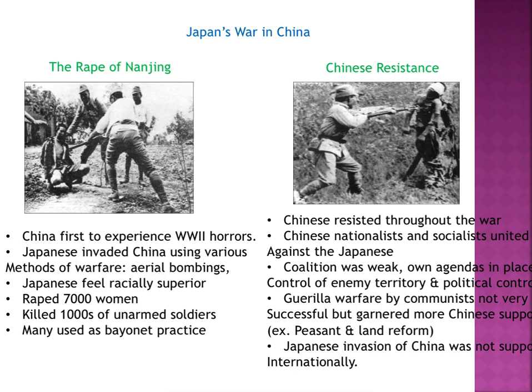The communists used guerrilla warfare — it was not very successful, but it garnered more Chinese support. The fact that the Chinese communists were willing to do whatever it took to protect the Chinese really spoke to the peasantry living there. This is going to be a big reason for the peasantry to support communism, and it will help communism establish itself in China after the war.